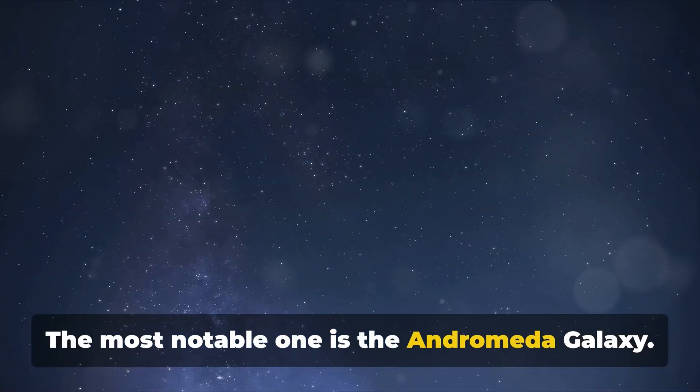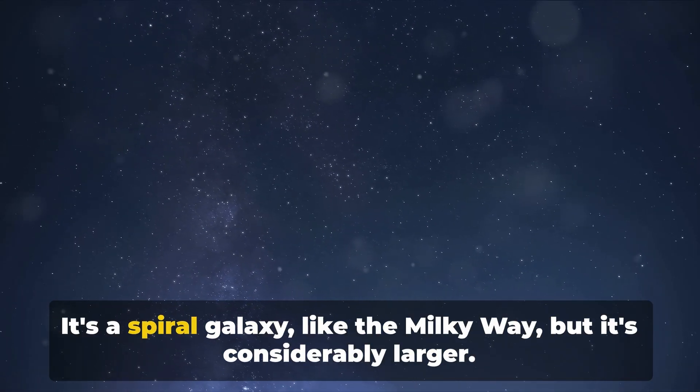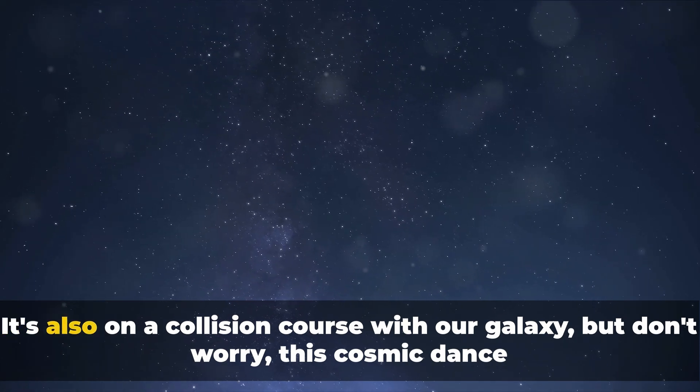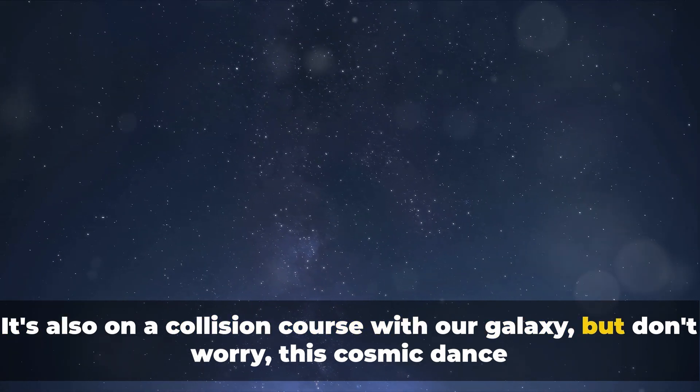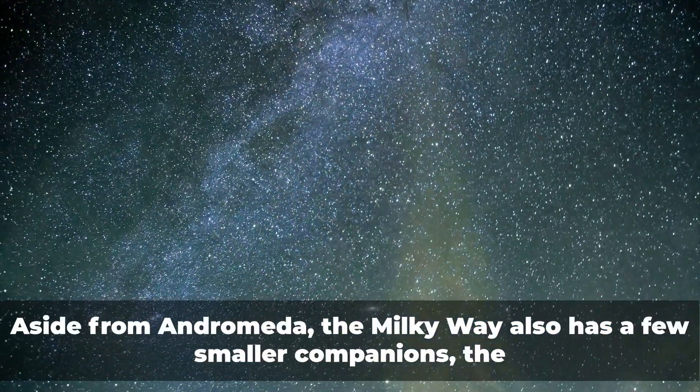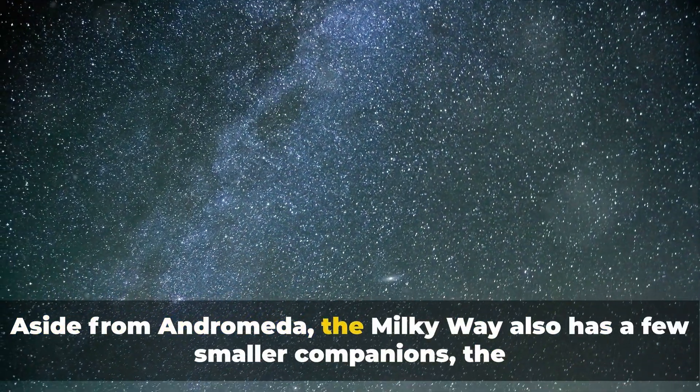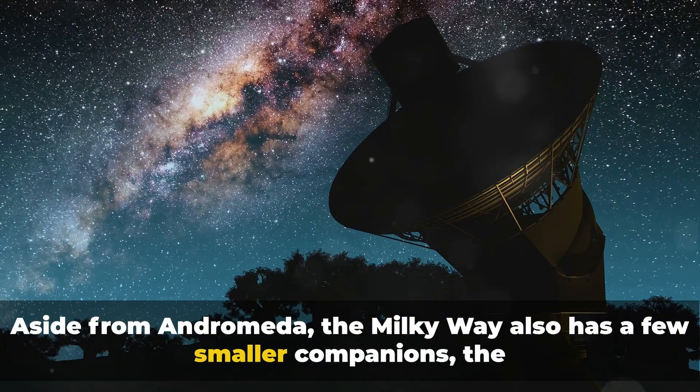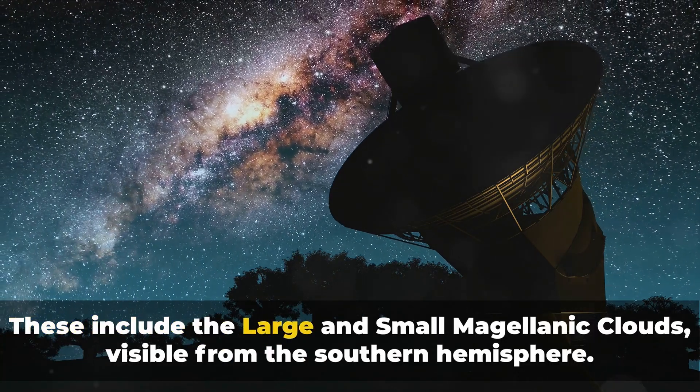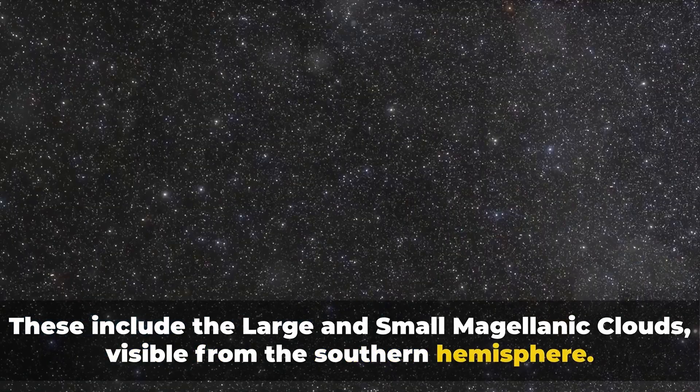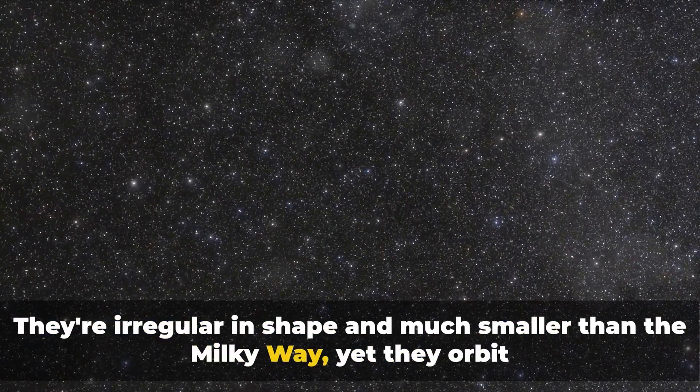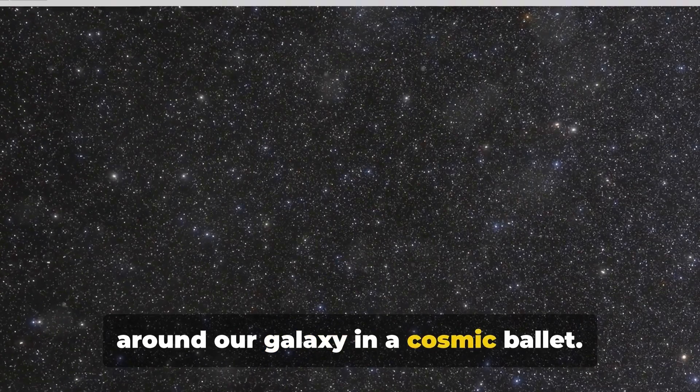Now let's meet some of our closest neighbors. The most notable one is the Andromeda Galaxy. It's a spiral galaxy like the Milky Way, but it's considerably larger. It's also on a collision course with our galaxy. But don't worry, this cosmic dance won't begin for another 4 billion years or so. Aside from Andromeda, the Milky Way also has a few smaller companions, the satellite galaxies. These include the large and small Magellanic clouds, visible from the Southern Hemisphere. They're irregular in shape and much smaller than the Milky Way, yet they orbit around our galaxy in a cosmic ballet.